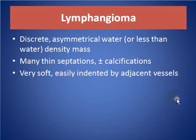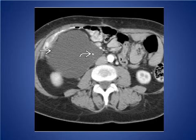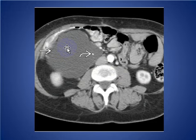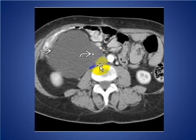Lymphangioma: a discrete, asymmetrical, water or less-than-water density mass lesion. Many thin septations are also noted, with or without calcification. It is very soft and easily indented by adjacent vessels. Here we see a large cystic water-density mass on axial enhanced CT displacing abdominal and retroperitoneal structures, with the presence of small calcifications suggesting lymphangioma.